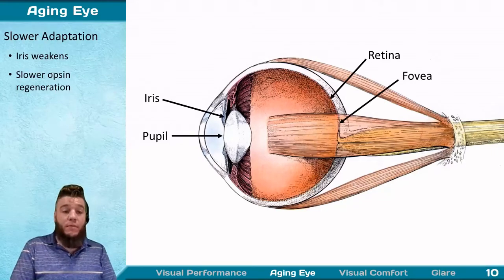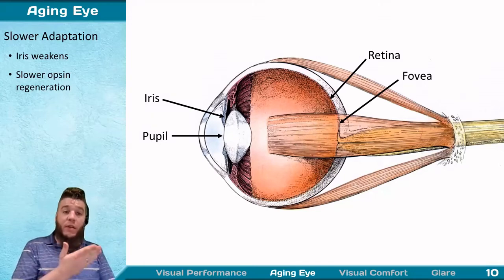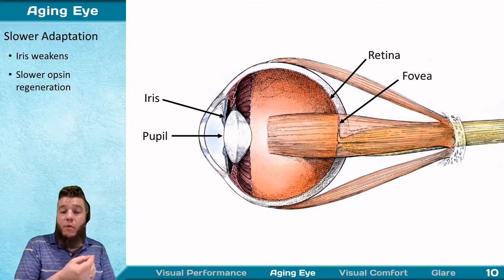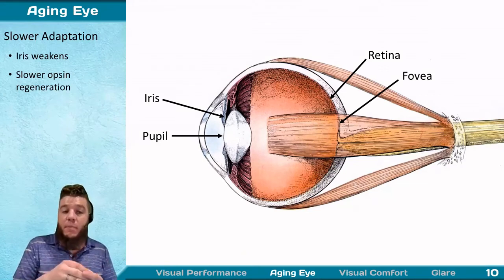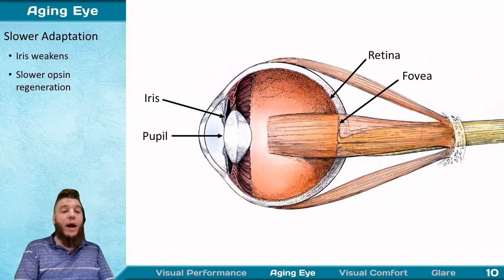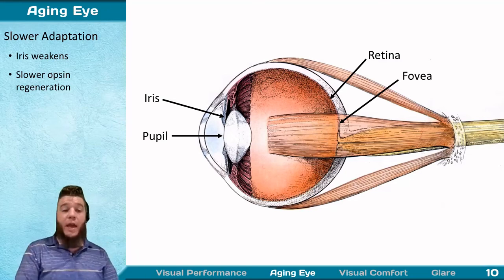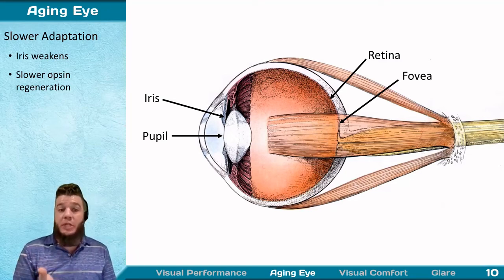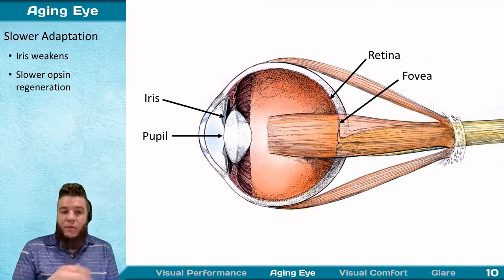The last important age-related effect is slower adaptation. Your iris weakens and is less able to fully dilate the pupil, and less able to quickly change size in response to differing light stimuli. Also, the opsins in your retina and fovea will more slowly regenerate as your eye ages. We already have problems with slow regeneration since bleaching is much faster than regeneration — which is why you get afterimage effects when you stare into the sun — and that only gets worse as you get older.